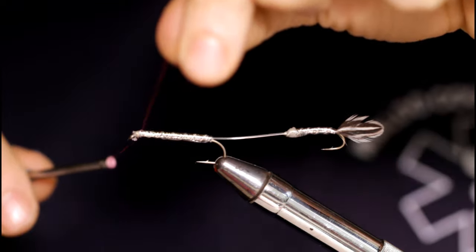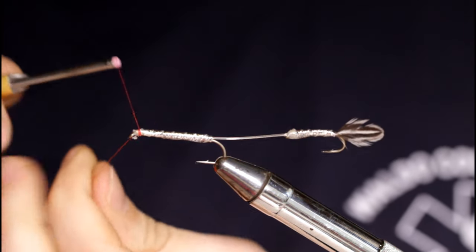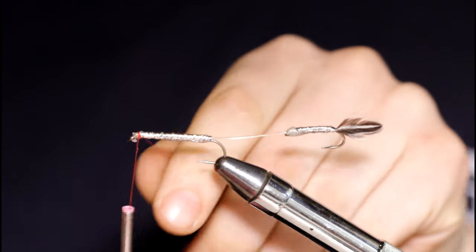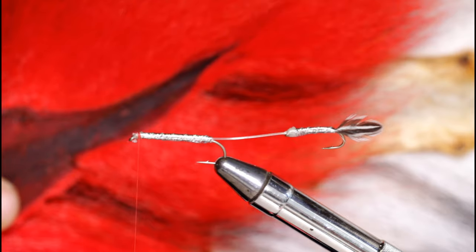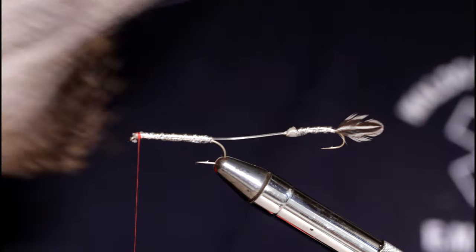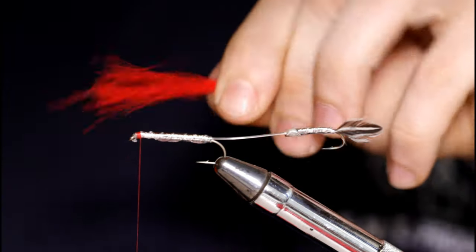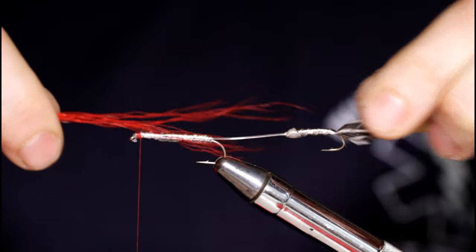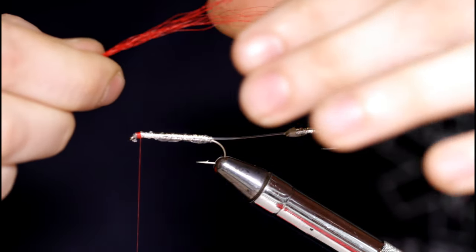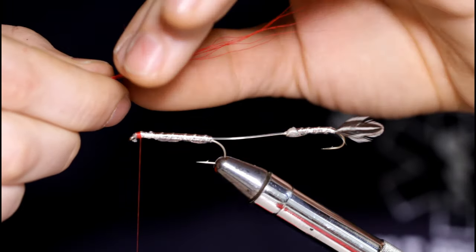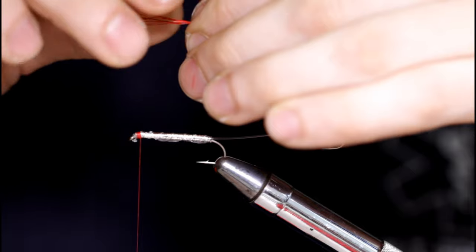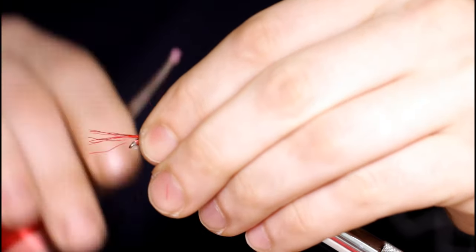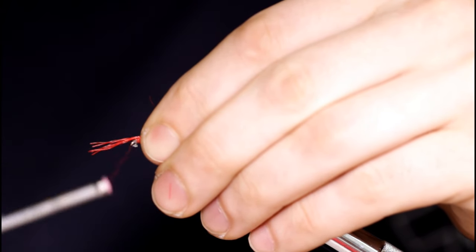So the bodies have dried. I'm going to come back with some red UTC thread in 70 denier. Now I'll come in with some bucktail. I'm going to need some white and some red bucktail. I'll start with the red. Pull out all the short fuzzy fibers here and tie in a very sparse amount. Just set it on top, take a few turns forward, and then bring the thread back.